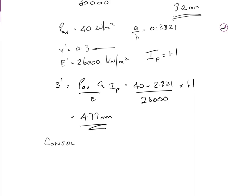Consolidation settlement is the difference between total drained and undrained elastic settlement: 4.77 − 3.2 = 1.57 millimeters. The drained settlement includes both the initial elastic settlement and the consolidation settlement, so subtracting the undrained elastic component isolates the consolidation part.